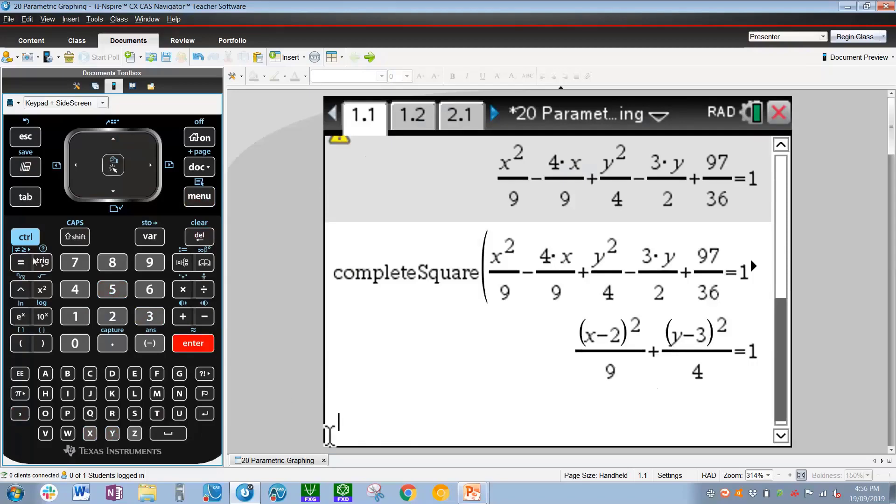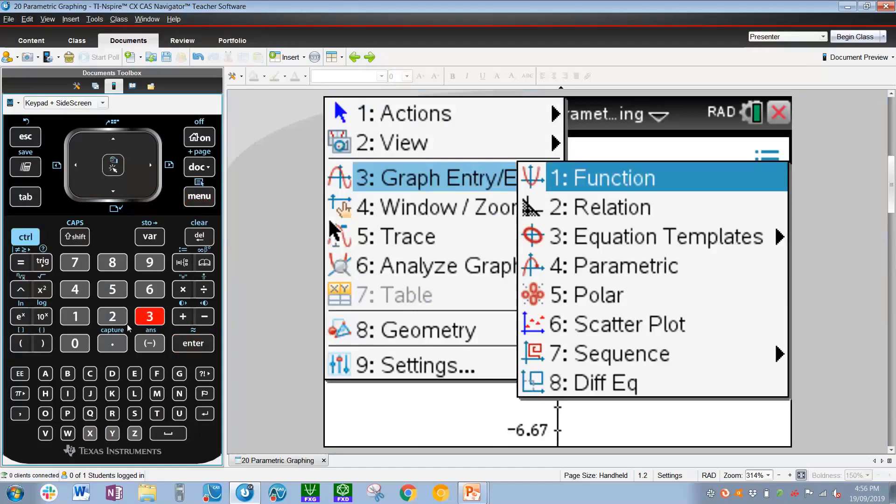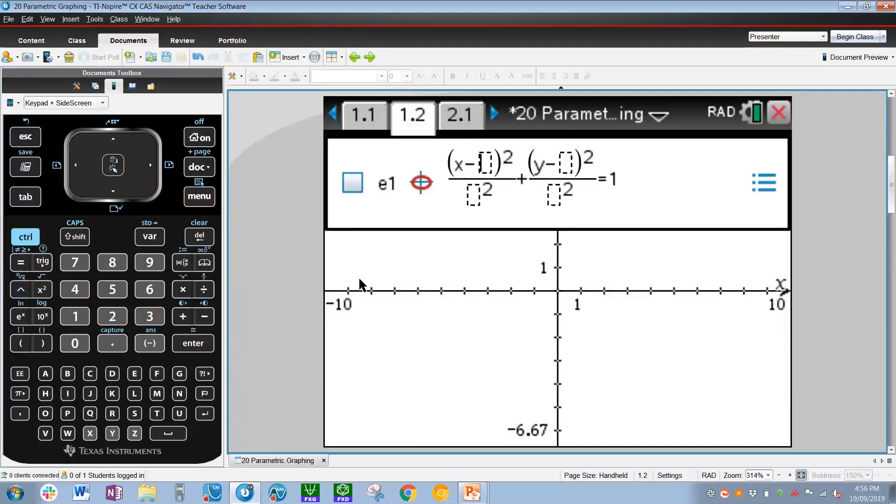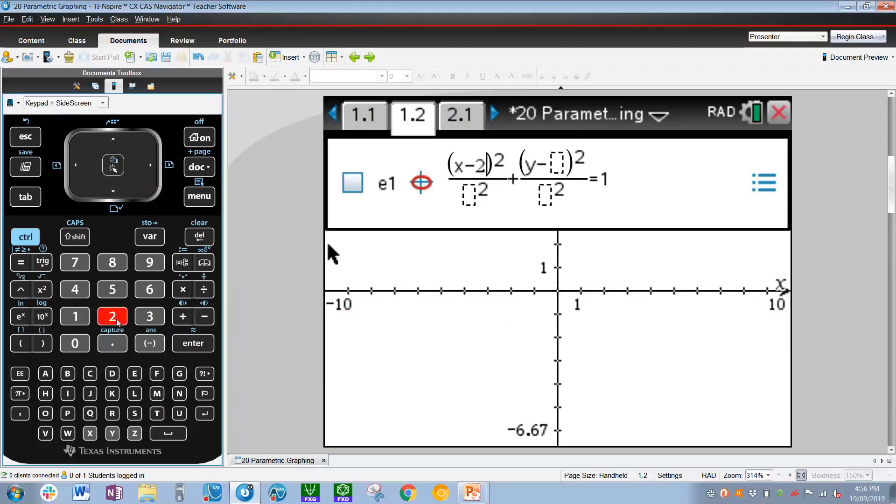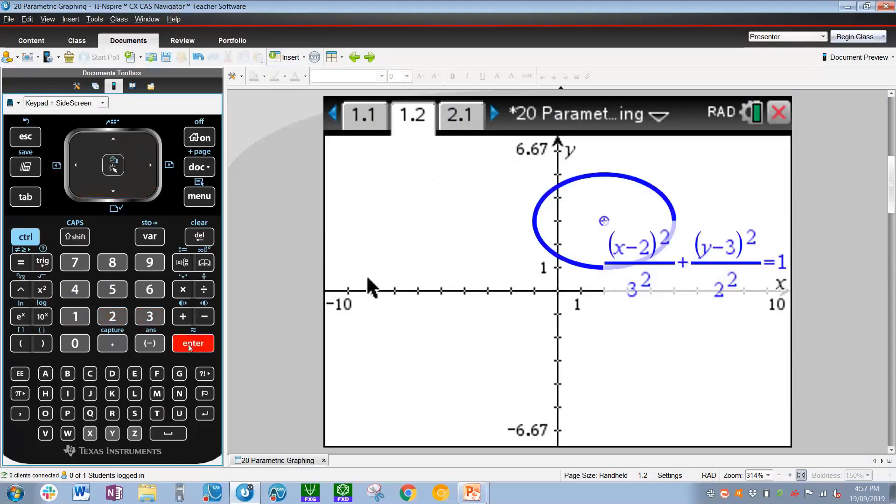The second part of the question mentions that we have to verify this using the graphs application. Going to the graphs application, what we're first going to do is use the Cartesian form from before. In order to enter a Cartesian ellipse equation, we have to go to menu, 3 for graph entry, 3 for equation templates, 4 for ellipse, and then 1 for center form. From the previous page, which was 1.1, we saw that the equation of the ellipse was x minus 2 squared over 9. However, notice how the box is being squared over there. So we have to write 3. In a similar fashion, we go to the y, and we have y minus 3 all squared over 4, which is 2 squared. And that equals 1, and that is our ellipse.